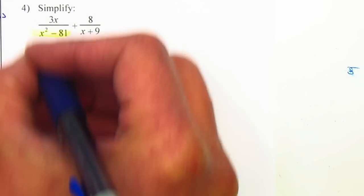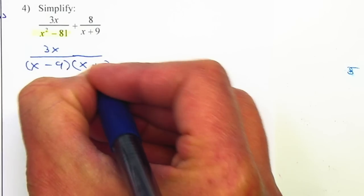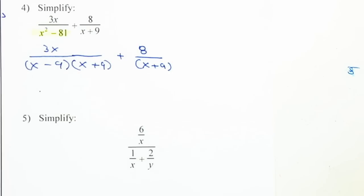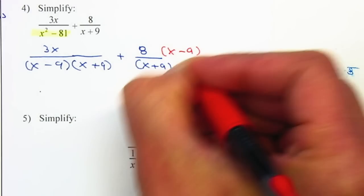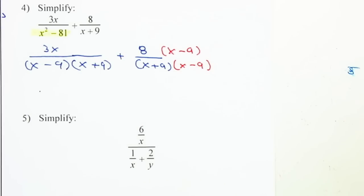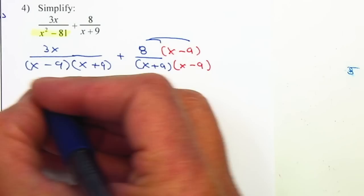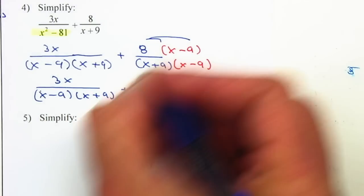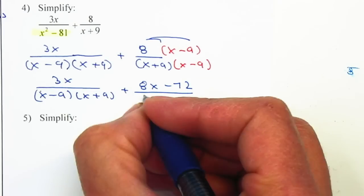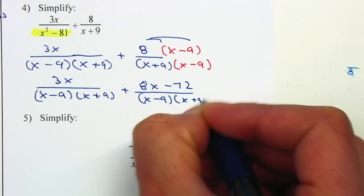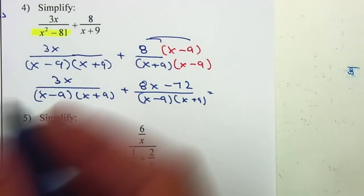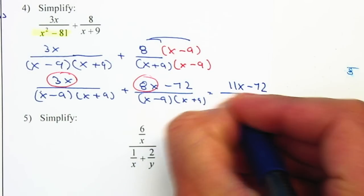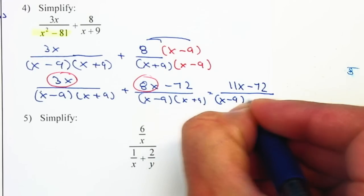So we have 3x/[(x - 9)(x + 9)] + 8/(x + 9). To make the denominators the same, multiply the right-hand side by (x - 9)/(x - 9): that gives 3x/[(x-9)(x+9)] + (8x - 72)/[(x-9)(x+9)]. Now that we have the same denominator, combine like terms: the result is (11x - 72)/[(x - 9)(x + 9)].